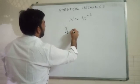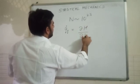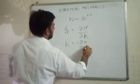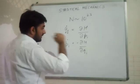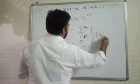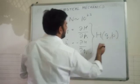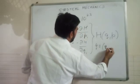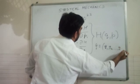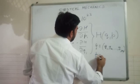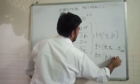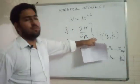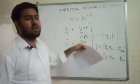each particle will be obeying the equation: Qi dot = dH/dPi and Pi dot = minus dH/dQi. Where the Hamiltonian here is a function of Q, P, where Q refers to, if there are N particles, then there will be Q1, Q2, Q3N and P is defined as P1, P2, P3N. So this is the Hamiltonian of the system, or we can say it's the energy if the Hamiltonian is independent of time.